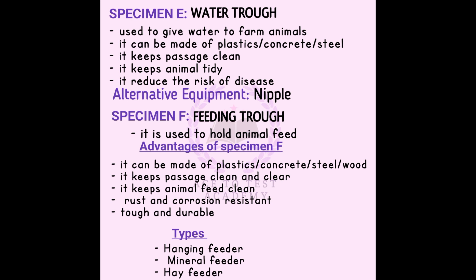An alternative to the water trough is the nipple drinker. Specimen F is the feeding trough, used for holding animal feed. It can be made of plastic or concrete. It keeps the passage clean and keeps animal feed clean — rather than placing food on the floor, the feeding trough holds it clean. It is also wear and corrosion resistant.